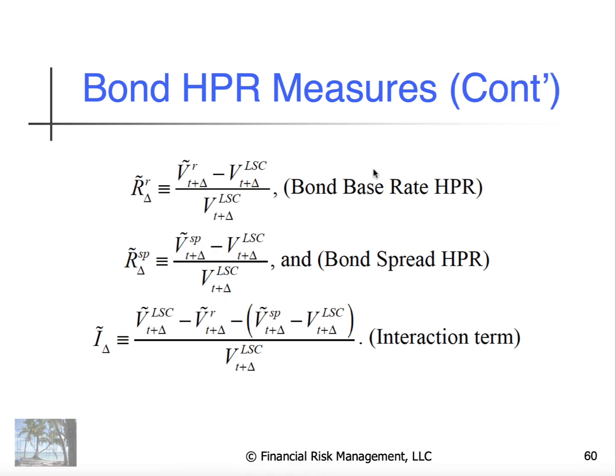And so the base rate holding period return is assuming just changes in the base curve. The bond spread holding period return is assuming just changes in the spread. And the interaction term captures everything else.